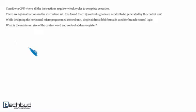Question goes like this. Consider a CPU where all instructions require 7 clock cycles to execute. There are 140 instructions in the instruction set.